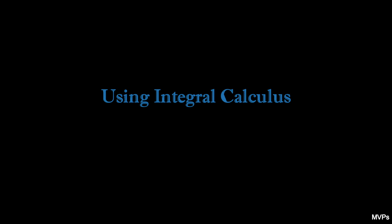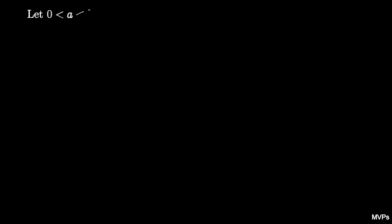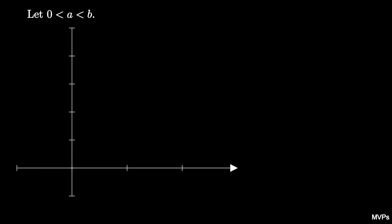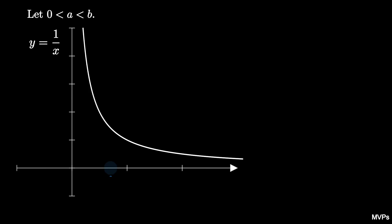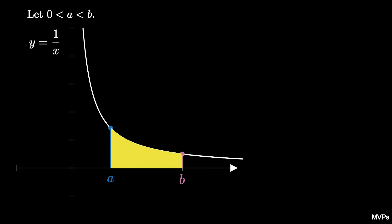Now let's prove the same fact using integrals. Again, assume that a and b are positive real numbers with a less than b. But this time, draw the graph of the function y equals 1 over x, which is a decreasing function. Now consider the area between the curve y equals 1 over x and the x-axis between the points x equals a and x equals b. This area is bounded below by the rectangle with height 1 over b, and bounded above by the rectangle with height 1 over a.